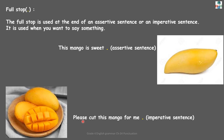Next example: 'Please cut this mango for me.' This is an imperative sentence — a sentence which gives an order, makes a request, or gives a suggestion. So at the end of this sentence also, we will put a full stop. With an assertive sentence and an imperative sentence, we will use the full stop.